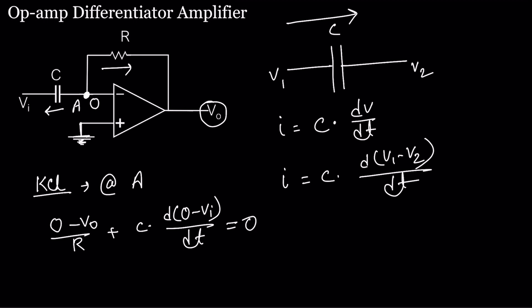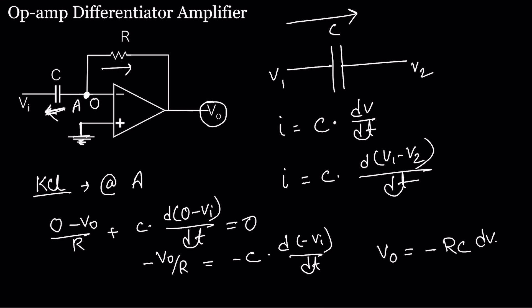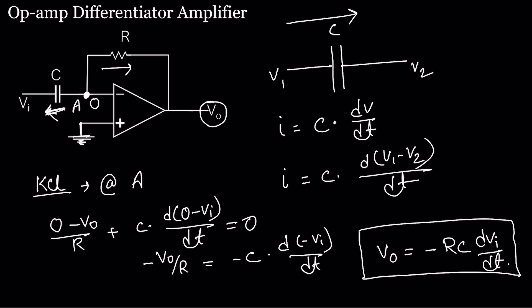I assumed the current flows from this direction to this direction. Solving this equation: -V0/R = -C · d(-Vi)/dt, which gives V0 = -RC · dVi/dt. This is the equation for the output voltage of a differentiator — V0 equals negative RC times dVi/dt, meaning we are performing differentiation of the input voltage Vi.